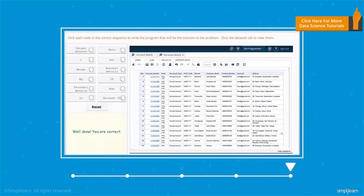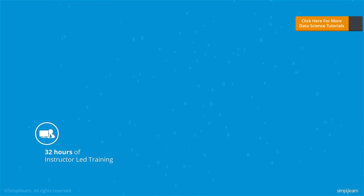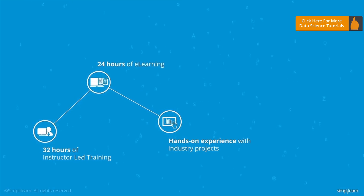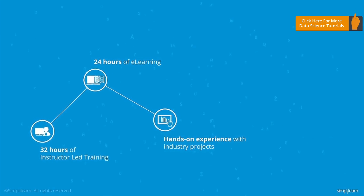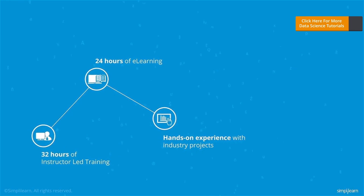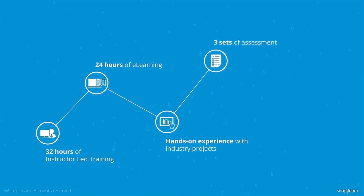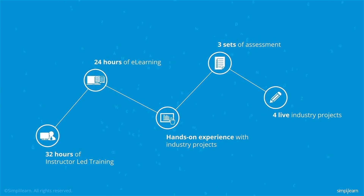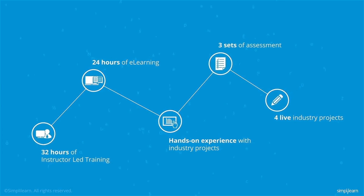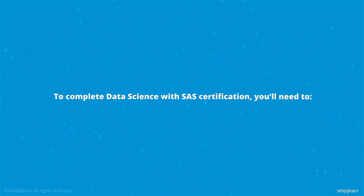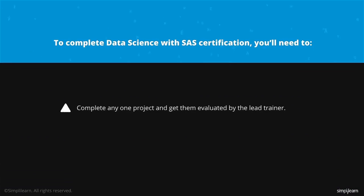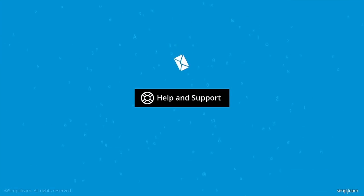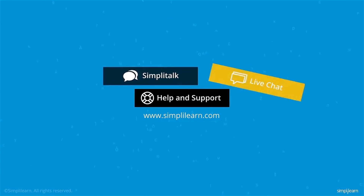The course comprises 32 hours of instructor-led training, 24 hours of e-learning, and hands-on experience with industry projects. You'll receive full support from the Simply Learn faculty throughout the course and mentoring for project work. You'll also be able to access three sets of assessment papers and four live industry projects on the SAS tool. On successful completion, you'll receive an experience certificate. To complete the Data Science with SAS certification, you'll need to complete any one project and get it evaluated by the lead trainer, score at least 80% on the online exam, and submit queries by writing to help and support on www.simplylearn.com or talking directly to support staff via Simply Talk and live chat.